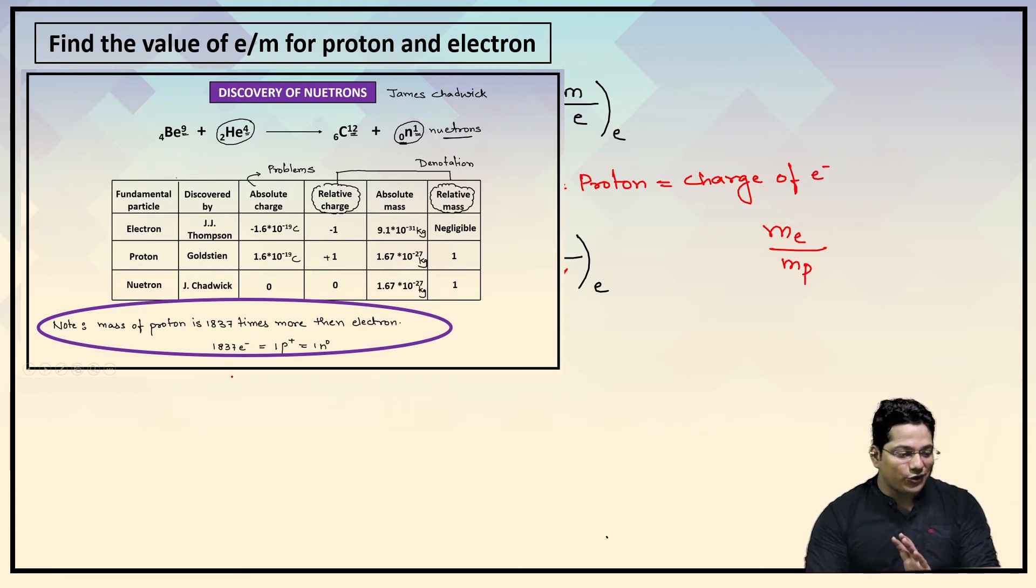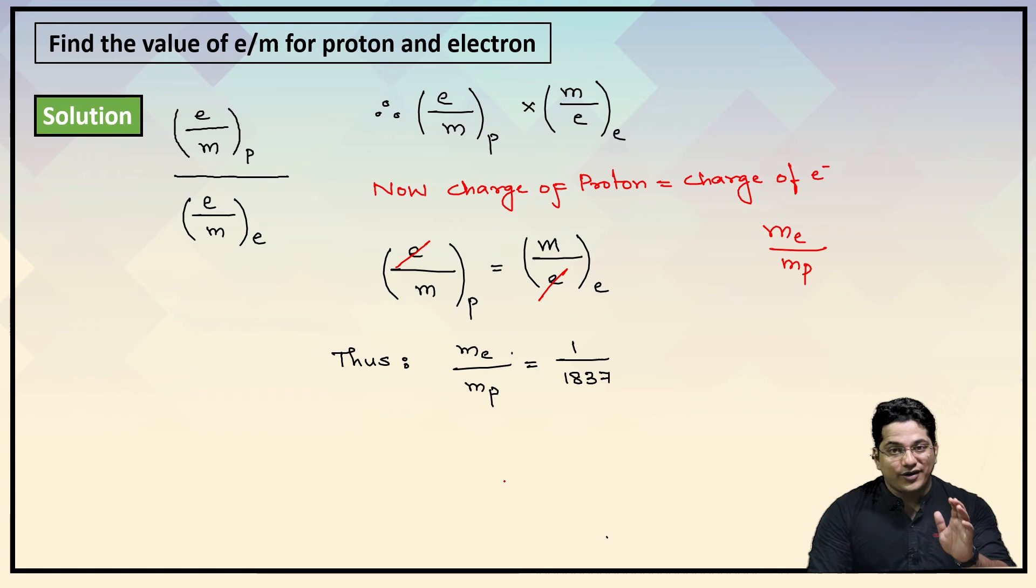In that note, we said that one proton is equal to the mass of 1837 electrons. So if this is right, can I say mass of electron upon mass of proton is nothing but equal to 1 upon 1837? Am I understood with this?